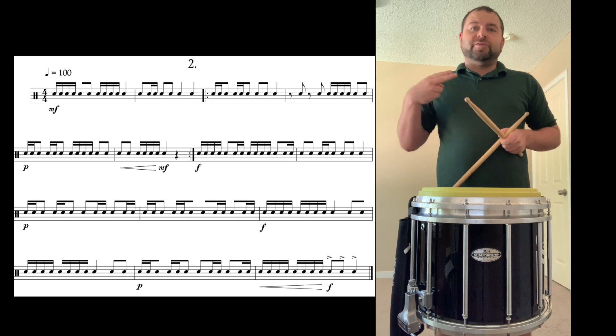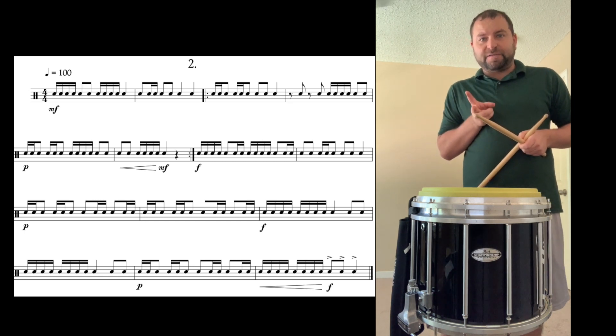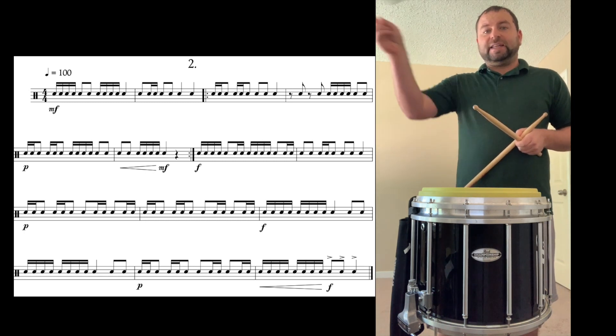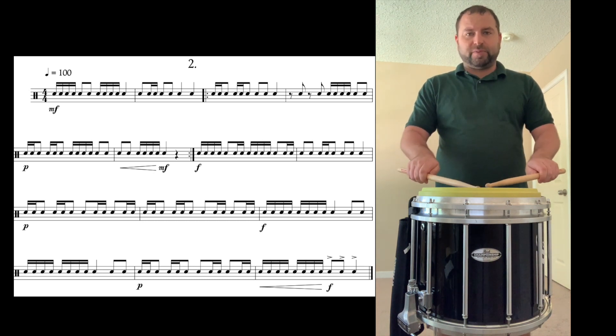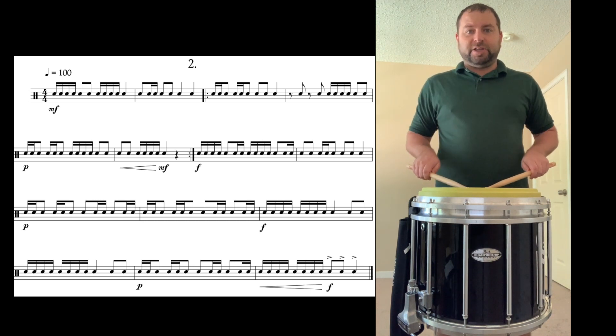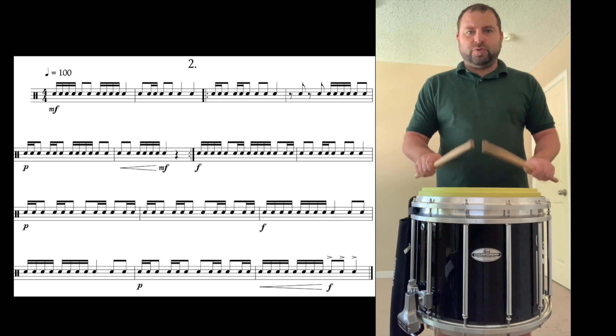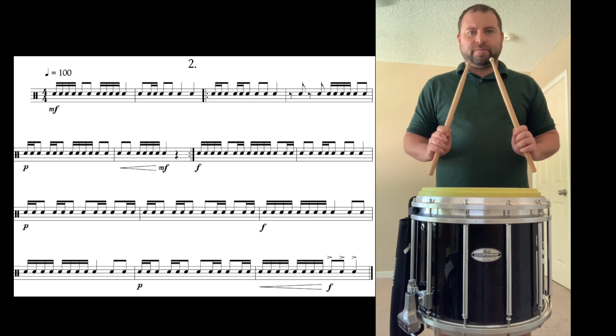Then look at the very last measure. There's a crescendo that gets soft, starts soft at the edge, and get loud. So you go from our low height to our high height, and then you go from playing to the edge to playing in the middle. 1e, and a 2e, and a 3e, and 4e. And that's it.